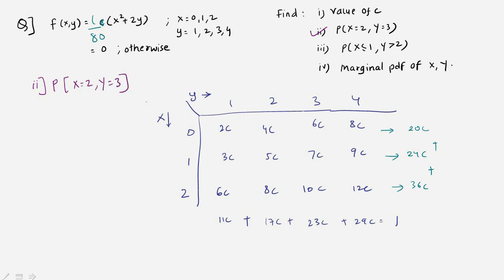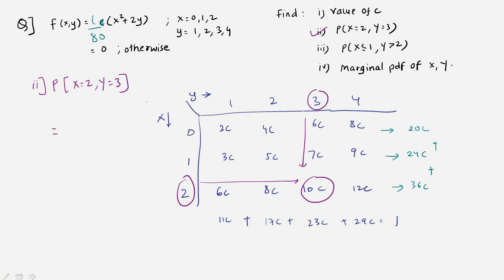Using the table, trace x = 2 and y = 3 to find the value 10c. So P(X=2, Y=3) = 10c = 10 × (1/80) = 1/8.